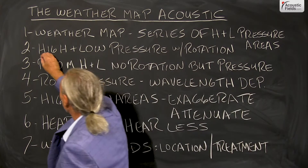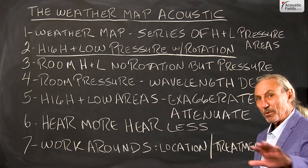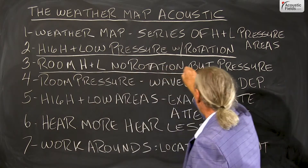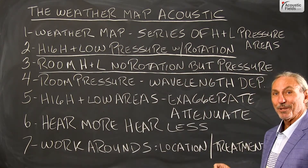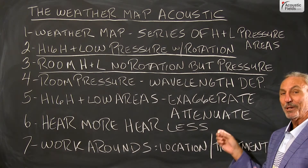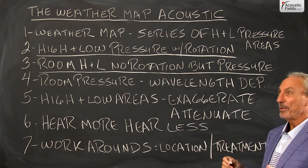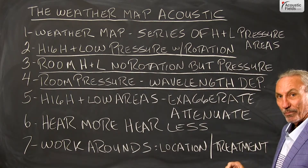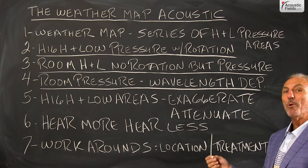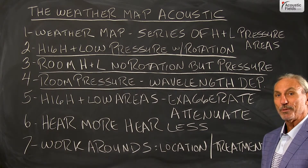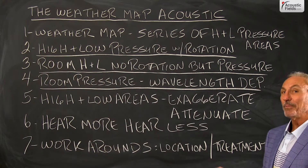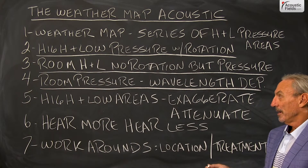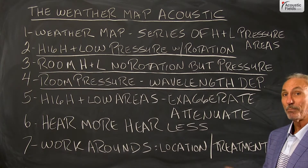So we have a series of high and low pressure areas across the whole surface area of our rooms. We don't have any rotation of winds in our room — not that I've seen in 12 years — but we do have pressure, so we can equate the pressure to the rotating winds. That pressure is all based on wavelength: the length of the frequencies that won't fit in the room or are not compatible with the dimensions or the volume of the room.